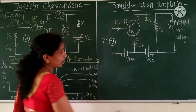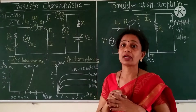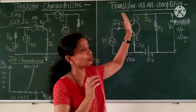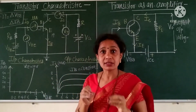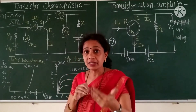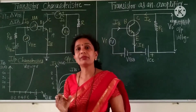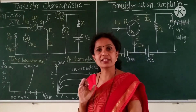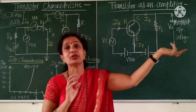The next point is the transistor as an amplifier. This is one of the most important applications of the transistor. Transistor can be used as a switch and also as an amplifier. An amplifier is an electronic circuit — if the signal is weak and we have to increase its strength, then an amplifier is used. An amplifier is an electronic circuit which increases the strength of a weak signal.